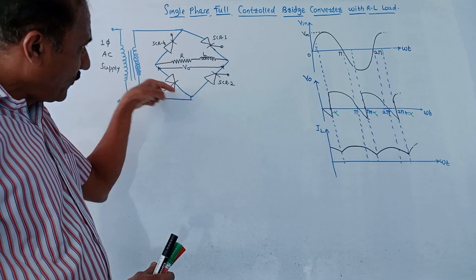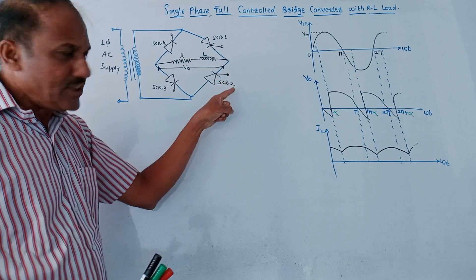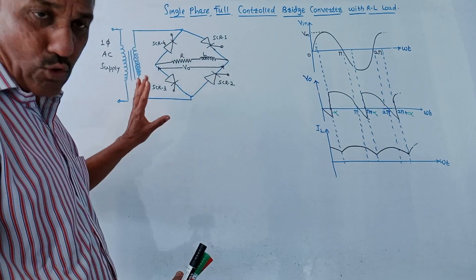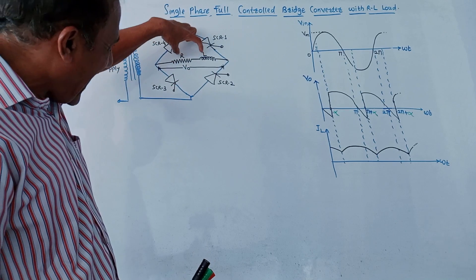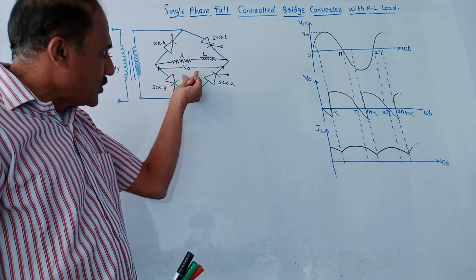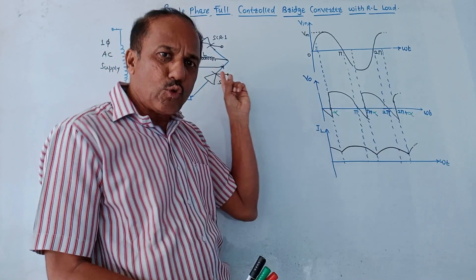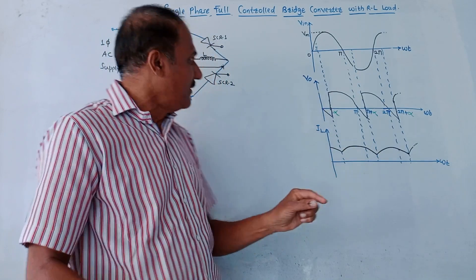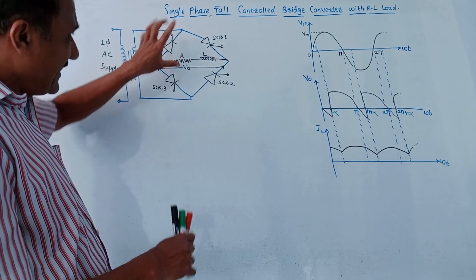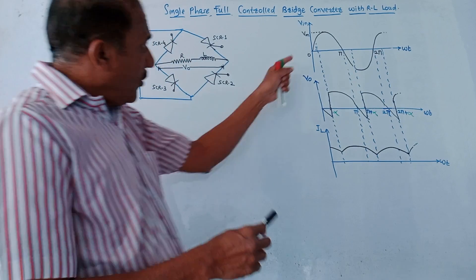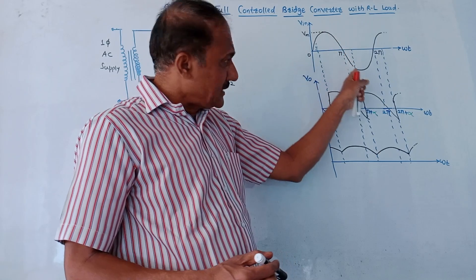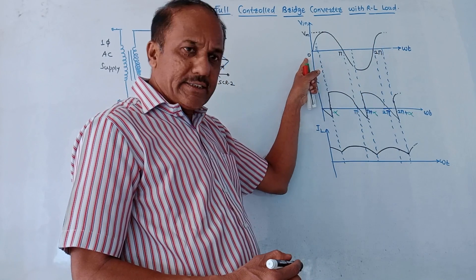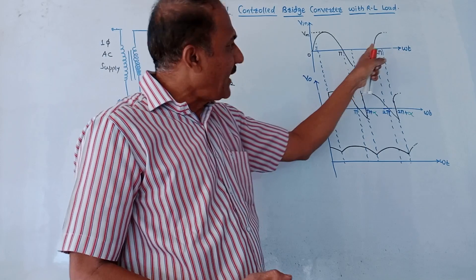This configuration is called a bridge configuration, where we are using four SCRs: SCR1, SCR2, SCR3, and SCR4. The RL acts as the load, across which we measure the output voltage V0 (also denoted as VL). The corresponding current is IL. This is the standard waveform of the input voltage, with markings at 0, π, 2π, and so on, where Vm is the maximum value.